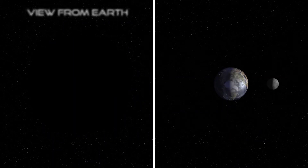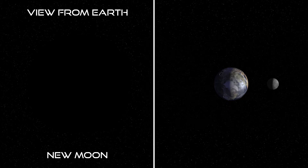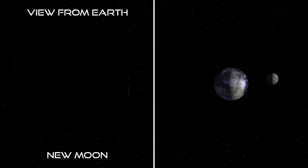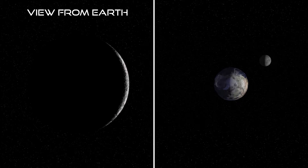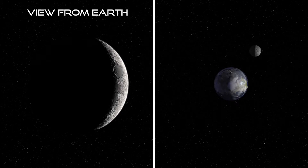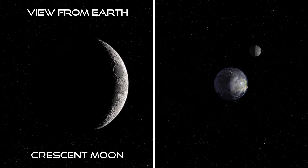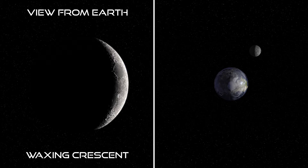When the Moon is between the Earth and the Sun, it's not visible and is called a New Moon. We're looking at the night side of the Moon from our vantage point. As the Moon moves around the Earth in our model, we see only a thin sliver of it on Earth. This is called a Crescent Moon, and because it's growing larger, it's called a Waxing Crescent.